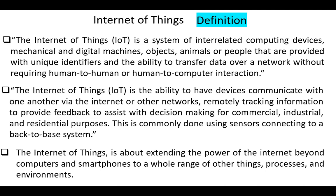So the Internet of Things is about extending the power of the Internet beyond computers and smartphones to a whole range of other things, processes and environments.